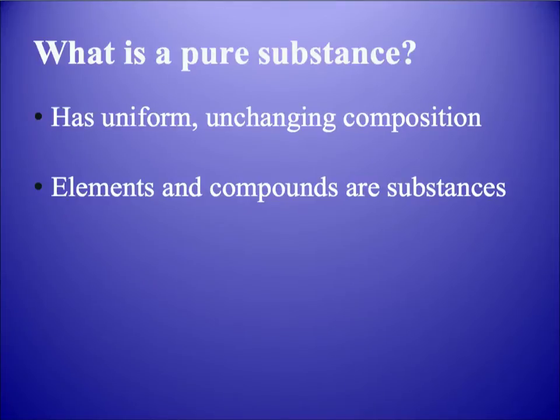We're going to talk about two types of pure substances. Pure substances have uniform, unchanging composition. The two examples we'll talk about are elements and compounds — both are considered pure substances.